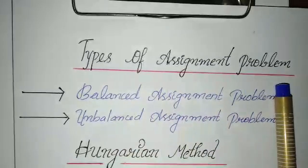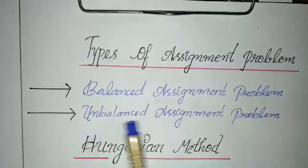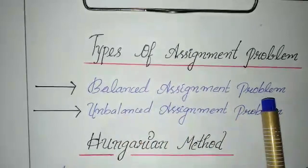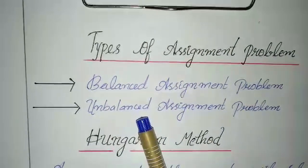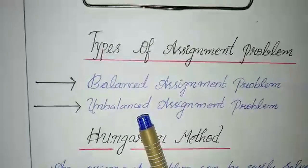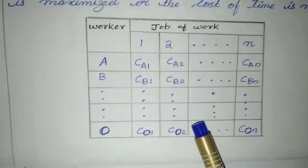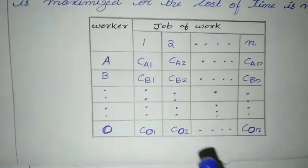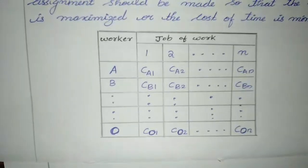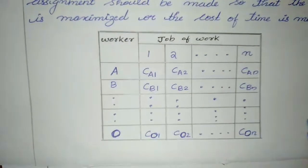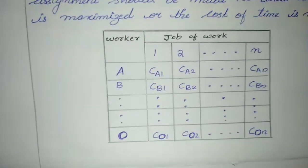There are mainly two types of assignment problems. The first is the balanced assignment problem and the second is the unbalanced assignment problem. In a balanced assignment problem, the number of rows and columns in the matrix are equal. In an unbalanced assignment problem, they are unequal. Before proceeding, we check whether rows and columns are equal. If they are unequal, it is unbalanced, and we convert it to a balanced problem by adding a dummy row or dummy column.